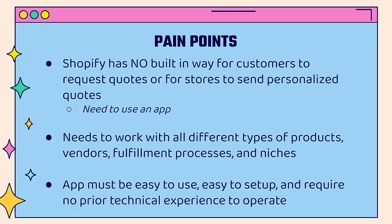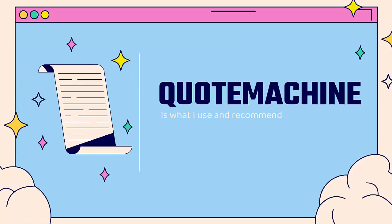So we're going to need to use an app. I'm going to show you the one that I use myself. This app needs to work with all different types of products, different vendors, different fulfillment processes, different niches. The app I use literally directly integrates with Shopify — all the different products inside your Shopify will be able to be put into the different quotes that you create. It needs to be easy to use, easy to set up, and require no prior technical experience to operate. That app is Quote Machine, and you'll see the link directly below this video.